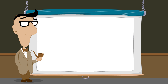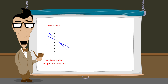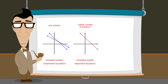In previous lectures, we saw how to use substitution or elimination to solve systems of two linear equations in two variables whose solution set consists of a single solution. In the next lecture, we will see how to interpret the results we get when solving systems with an infinite number of solutions or no solutions.